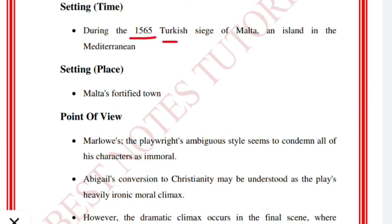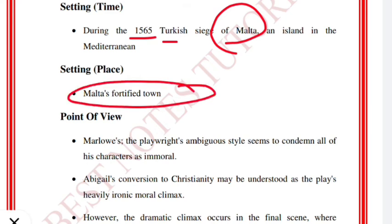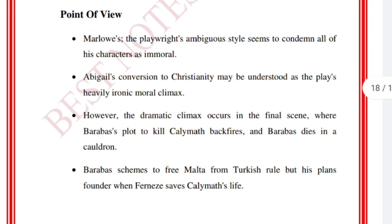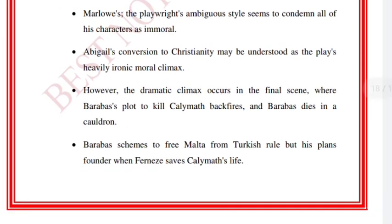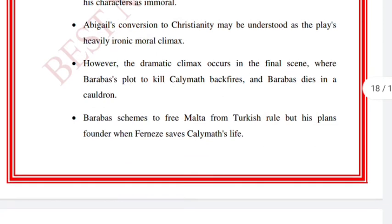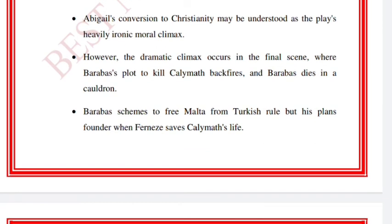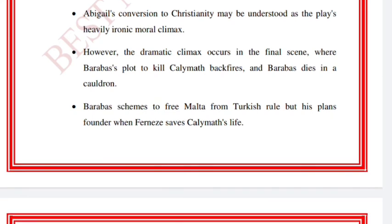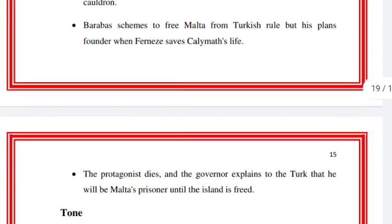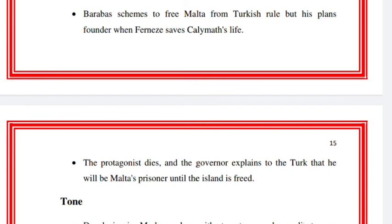The genre of the play is tragic comedy and a satire on religious hypocrisy and Machiavellian scheming. Written between 1589 and 1591 in London. The earliest edition in quarto dates from 1633, probably based on a copy of Marlowe's manuscript. The narrator is Machiavel — a caricature of Machiavelli, the famous 16th-century author on statecraft. The protagonist of this work is Barabas. The setting is Malta during the 1565 Turkish siege of Malta, with Malta's fortified town as the setting place.